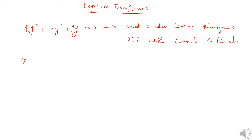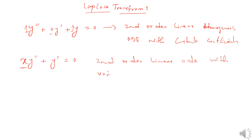If a differential equation is given as x·y'' + y' = 0, the coefficient is x, so it has variable coefficients. It is still a second-order linear ODE, but with variable coefficients. It is also homogeneous because the right-hand side is zero.